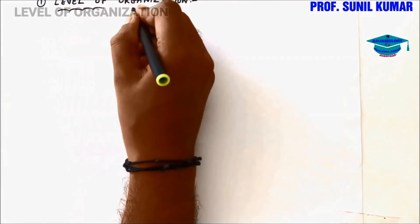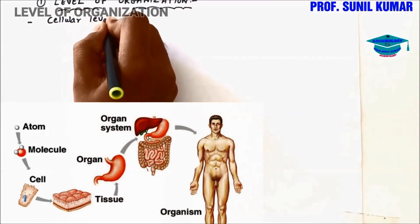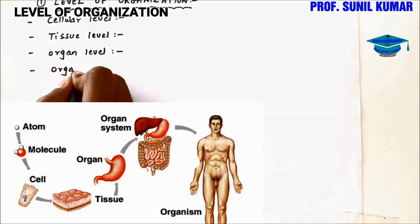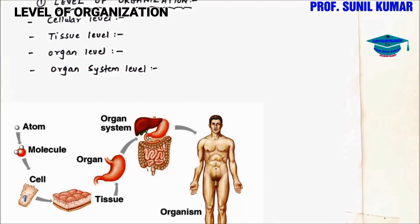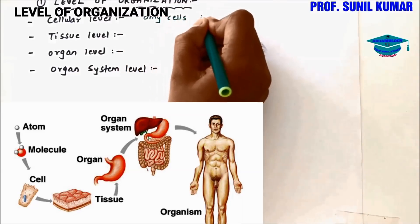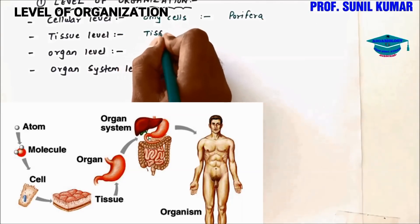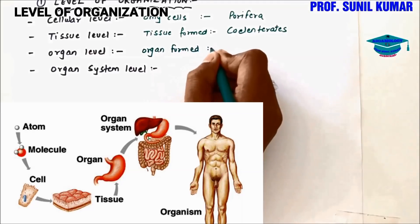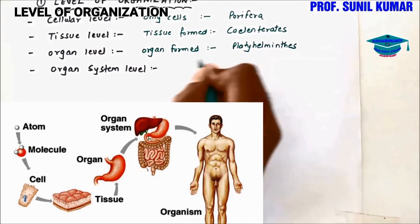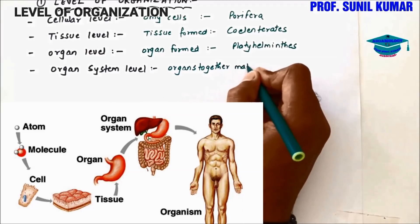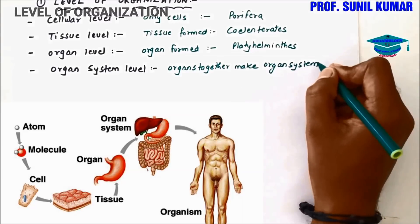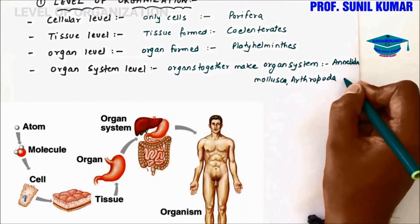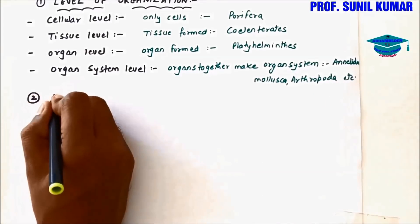Level of organization: animals are arranged at different levels. First is cellular level; second is tissue level, where cells form tissue; third is organ level; fourth is organ system level. Cellular level means animals are made up of only cells — the cells do not form tissue; example is Porifera. Tissue level means cells form tissues but not organs; example is Cnidaria. Organ level means organs are formed; example is Platyhelminthes. Organ system level means organs come together to make well-developed systems like respiratory or digestive; examples include Annelids, Molluscs, and Arthropods.